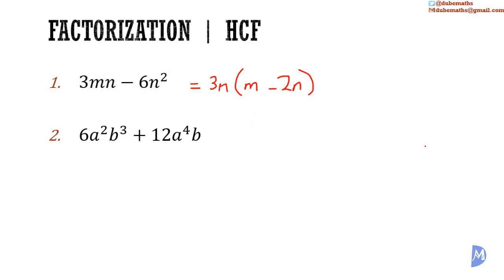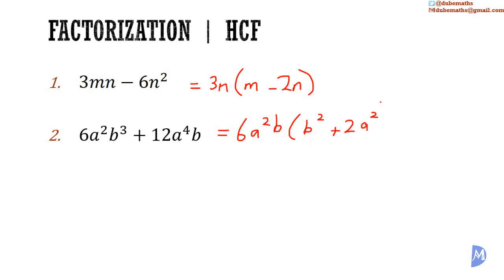Example two: 6a squared b cubed added to 12a to the 4th power b. The HCF is equal to 6a squared b. What do I multiply 6a squared b by to get 6a squared b cubed? I multiply it by b squared. What do I multiply 6a squared b by to get 12a to the 4th power b? I multiply it by positive 2a squared. Factorizing gives the factors 6a squared b and b squared plus 2a squared.